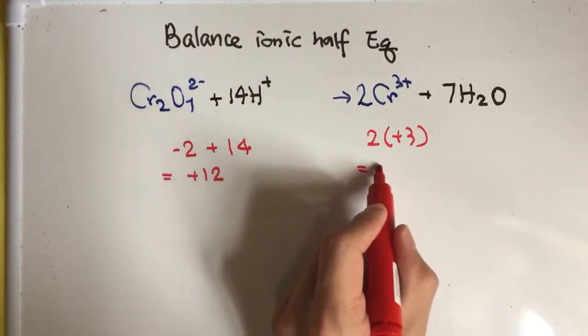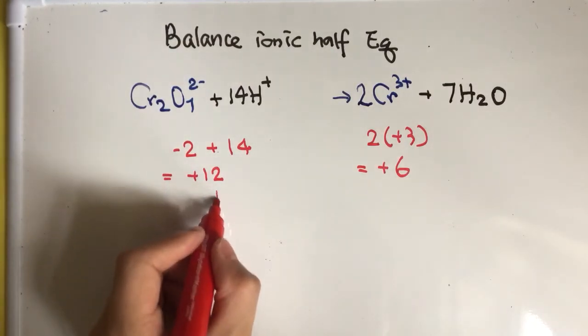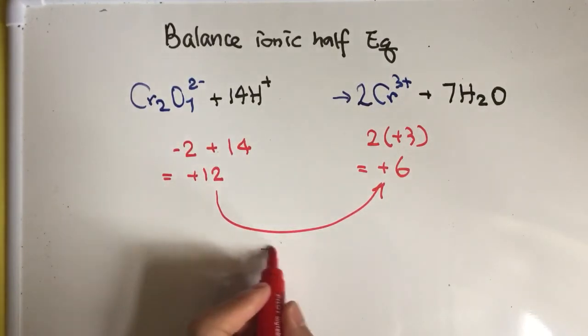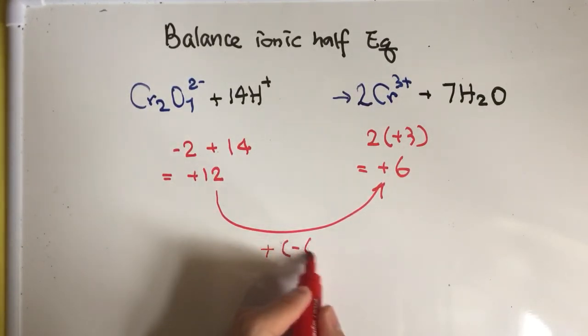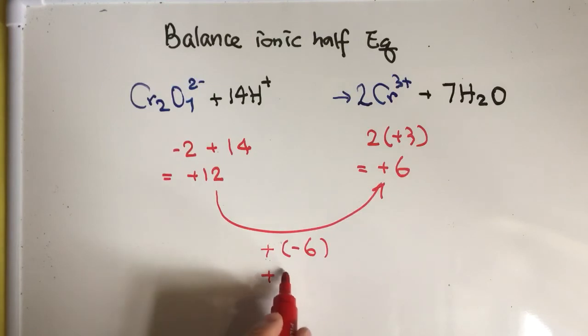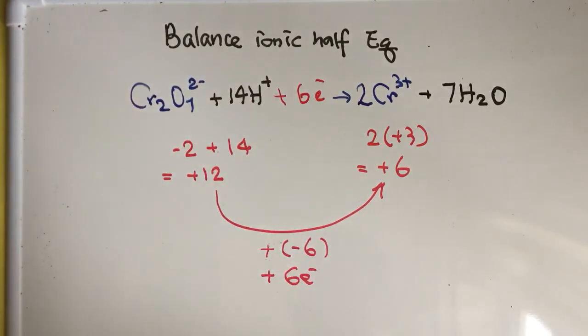In order to balance the charge between the reactant and the product, how can you make this equal? You will add 6-, which is actually 6 electrons. You should add the 6 electrons to the reactant side. And here we go, it is the balanced ionic half equation of dichromate ion. Thank you.